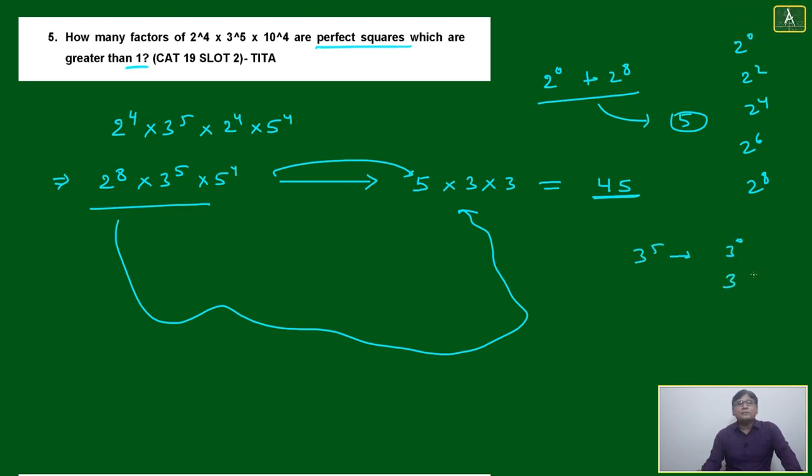3 to the power 5. How many options you have? 3 to the power 0, 3 square, 3 to the power 4. 3 options you have.